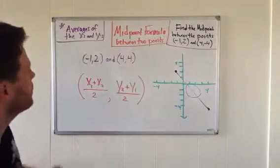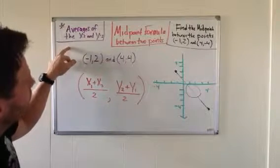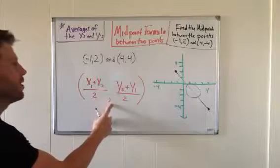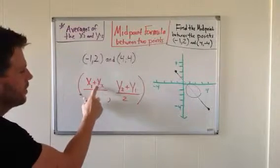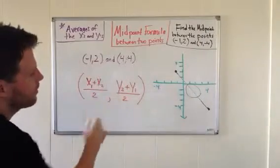So the formula is the averages of the X's and the average of the Y's. This is an ordered pair. What we're going to do is take the X values, average them together, and take the Y values and average them together.